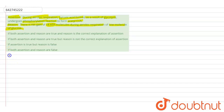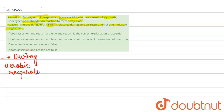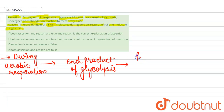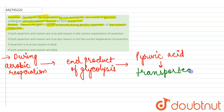Looking at the assertion first: during aerobic respiration, the end product of glycolysis — pyruvic acid — is transported from the cytoplasm into the mitochondria.